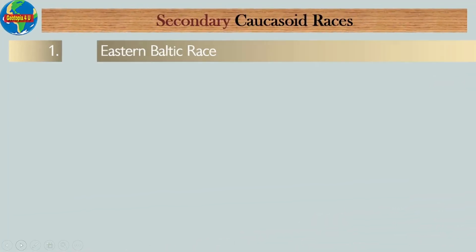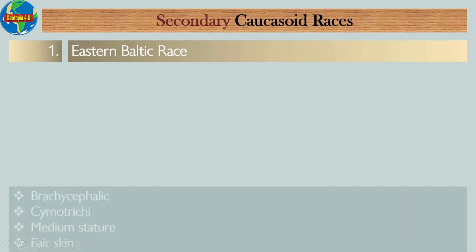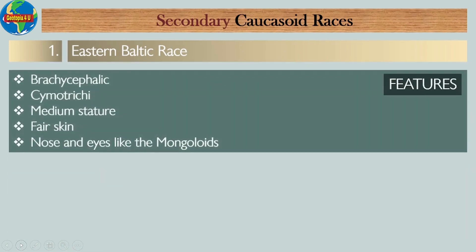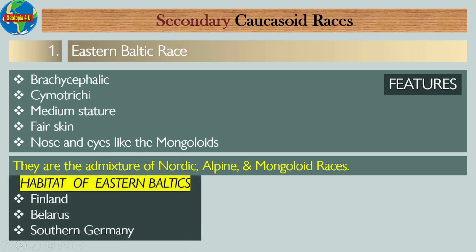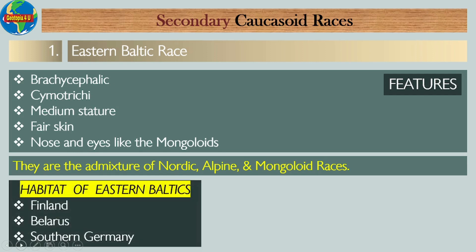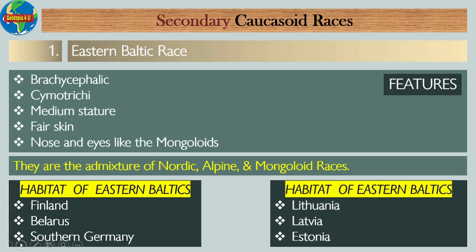Secondary Caucasoid races — Number one: Eastern Baltic race. Their features include: they are brachycephalic; they are cymotrichous; they have medium stature; they are fair-skinned; and they have nose and eyes resembling the Mongoloids. They are an admixture of Nordic, Alpine, and Mongoloid races. The habitat of the Eastern Baltic race includes Finland, Belarus, southern Germany, Lithuania, Latvia, and Estonia.